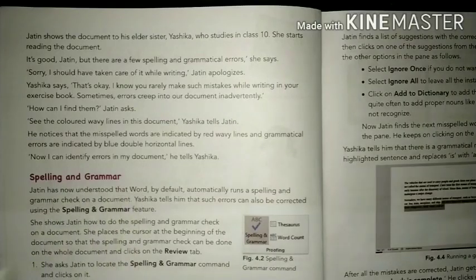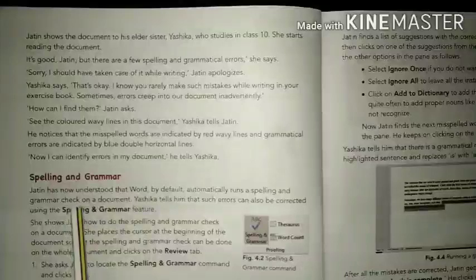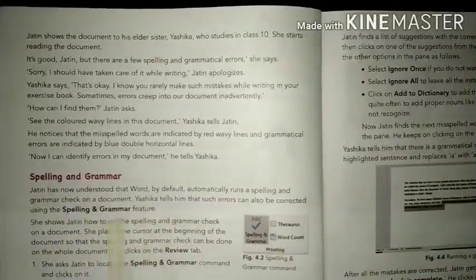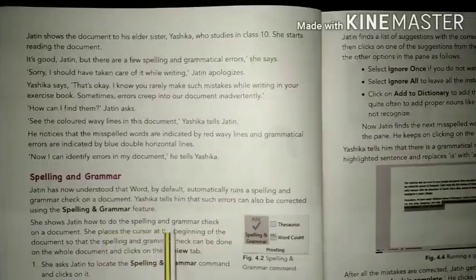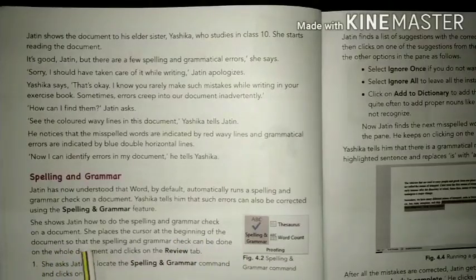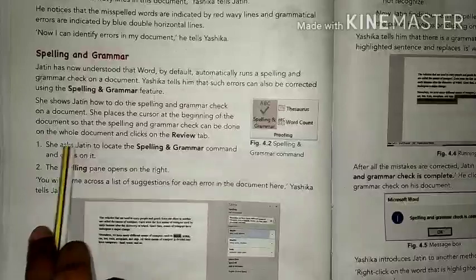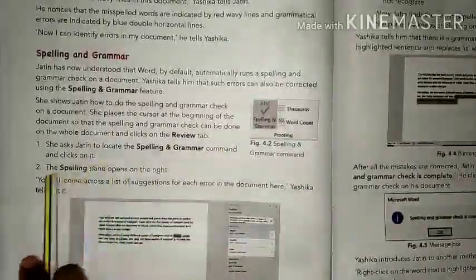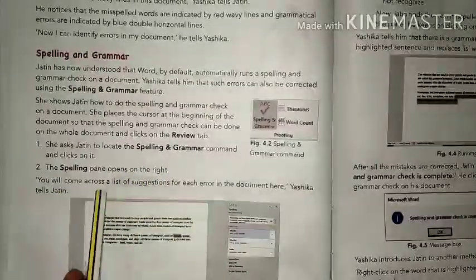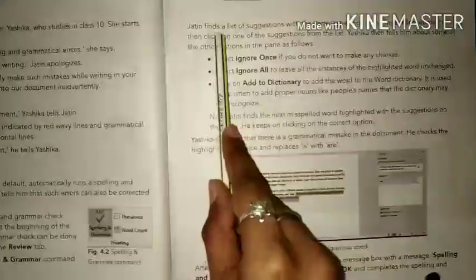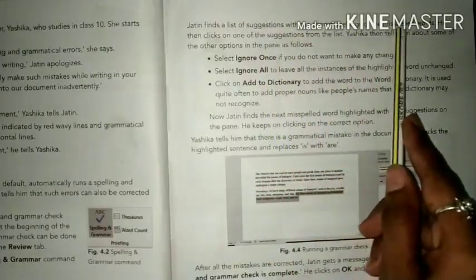The second topic is spelling and grammar. Jatin has now understood that Word by default automatically runs a spelling and grammar check on a document. Yashika tells him that such errors can also be corrected using the spelling and grammar feature. She tells Jatin how to do the spelling and grammar check. She places the cursor at the beginning of the document and clicks on the Review tab. She asks Jatin to locate the spelling and grammar command and click on it. The spelling pane opens on the right, showing a list of suggestions for each error.